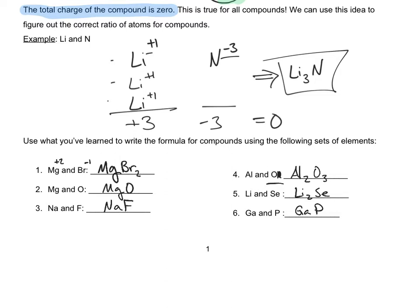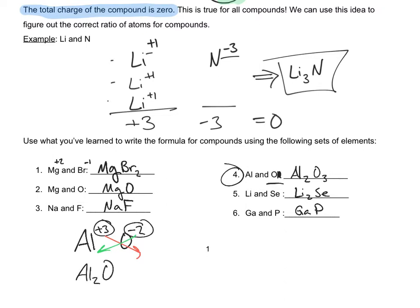Now that you've worked on balancing those, I'm going to show you a little shortcut you can use. If you look at the charges on a compound — let's look at number four, aluminum and oxygen — you write the charges at the top. Aluminum is plus three and oxygen is negative two. If the charges match, they're already balanced and you can just write the compound one-to-one and you're done. But if the charges are different, you can use what's called the crisscross method — you take these ionic charges and cross them down to the other side, which results in Al having a subscript of two and O having a subscript of three, which is the same answer as before.